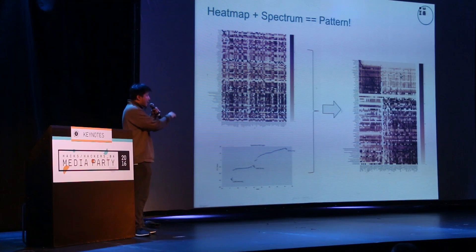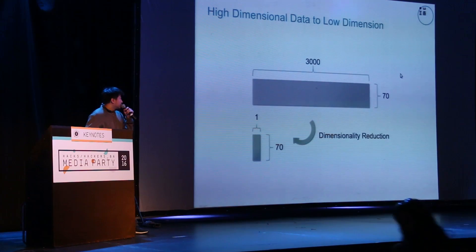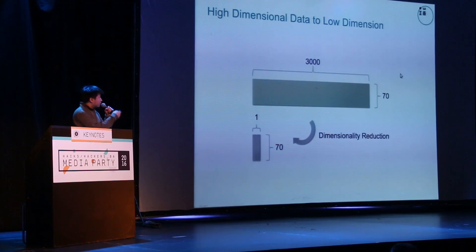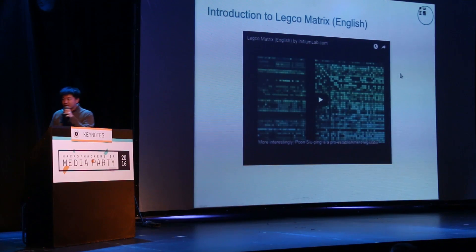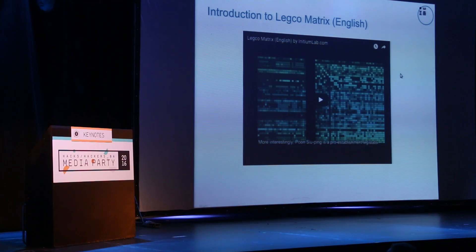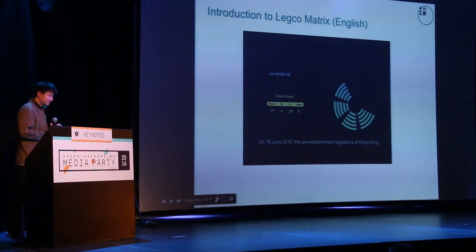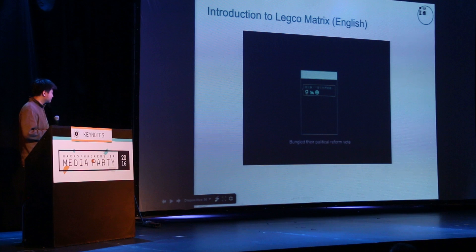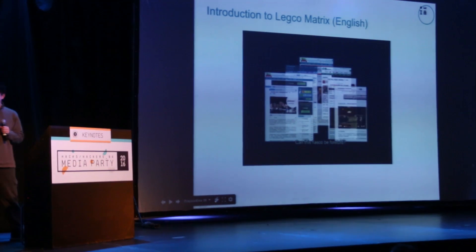If you follow this heat map and check more details, you will find some other interesting points. On the 18th of June 2015, the pro-establishment legislators bungled their political reform vote. Afterwards, internal communications were leaked. Can this fiasco be foretold? We try to answer this by studying voting patterns.